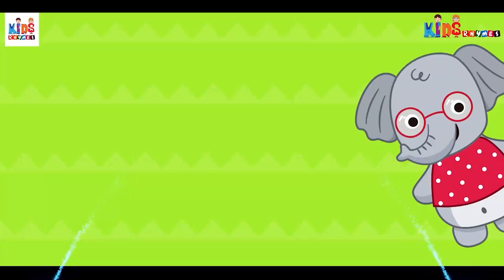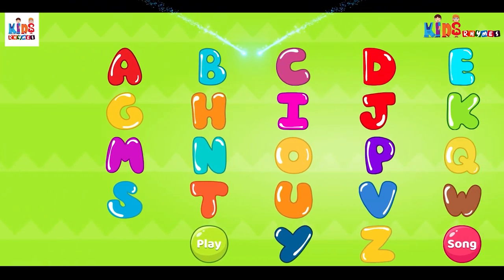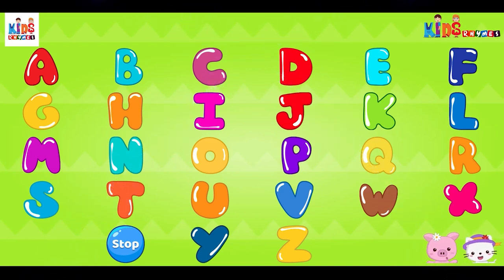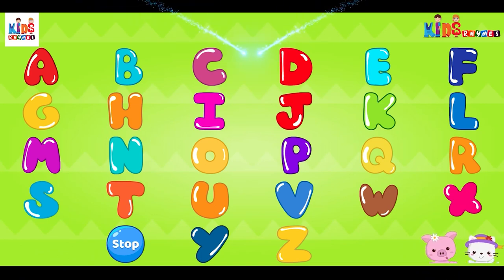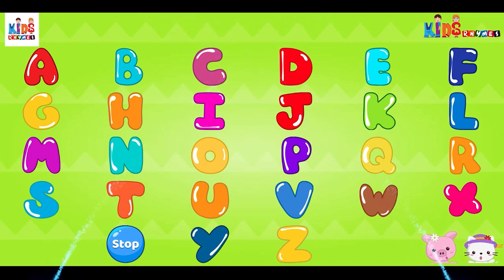Hi, I am Ellie. Let's tap these letters together: A, B, C, D, E, F, G, H, I, J, K, L, M, N, O, P, Q, R, S, T, U, V, W, X, Y, and Z. Now I know my ABC's, next time won't you sing with me.